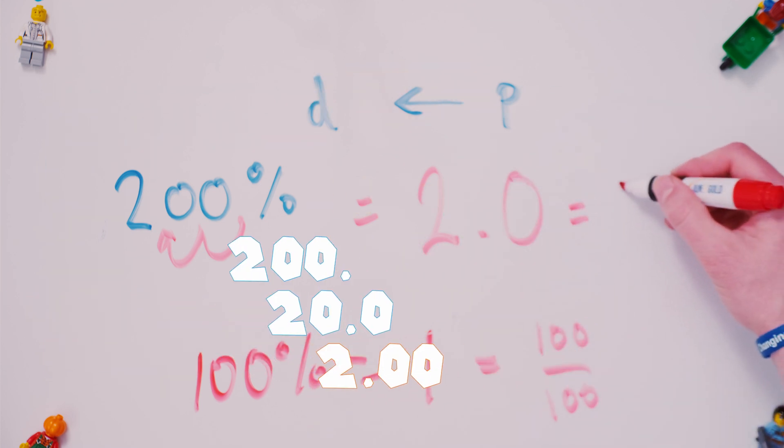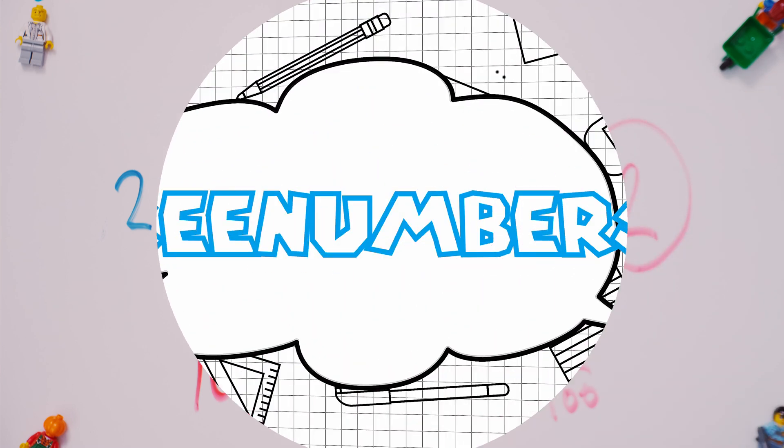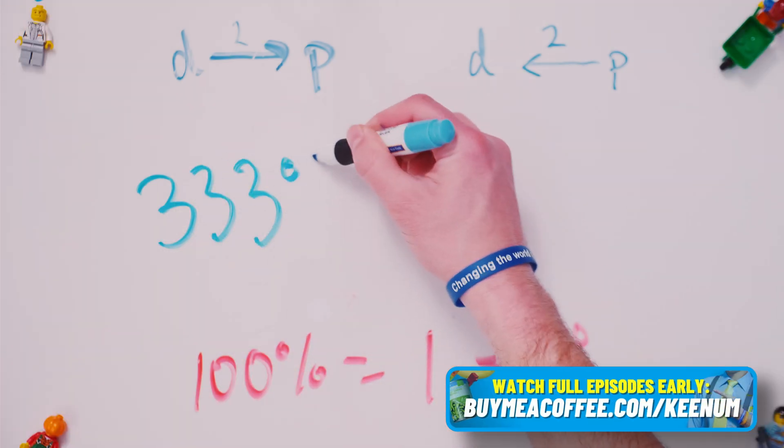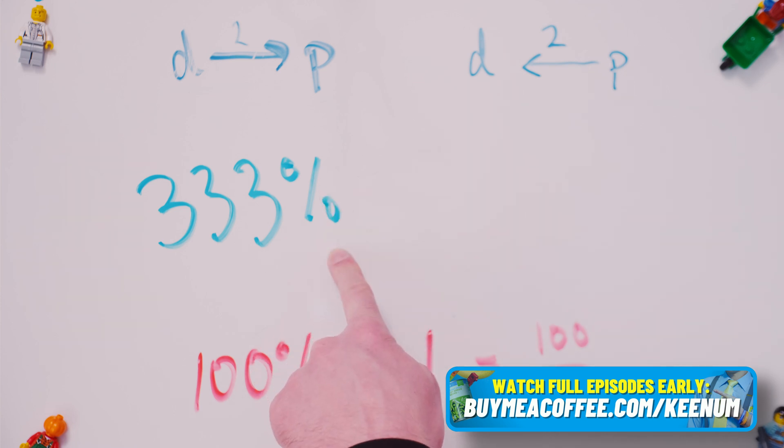200% is the same thing as saying two. And Bob's your uncle. P numbers. Welcome to the bonus section where all your dreams don't come true. Three hundred and thirty-three percent. Don't get scared. We are converting.